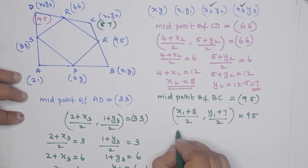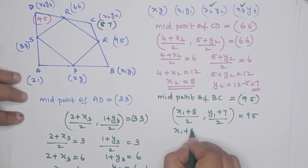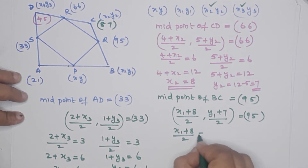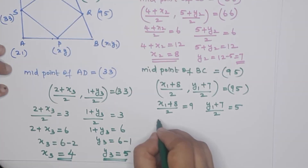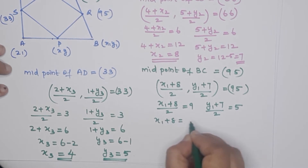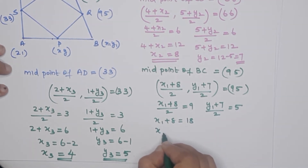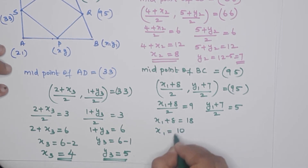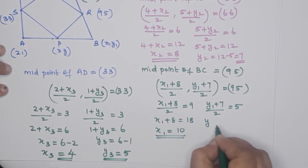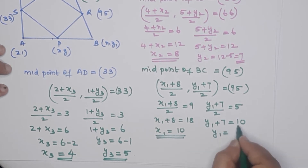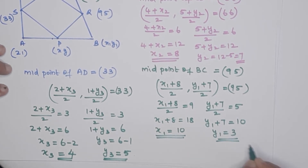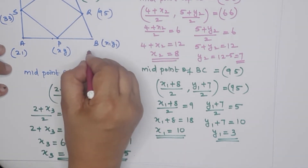From x1 plus 8 over 2 equals 9: x1 plus 8 equals 18, so x1 equals 10. From y1 plus 7 over 2 equals 5: y1 plus 7 equals 10, so y1 equals 3. Therefore (x1, y1) is (10, 3), meaning B is at (10, 3).